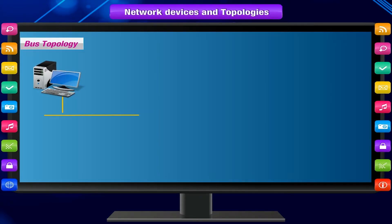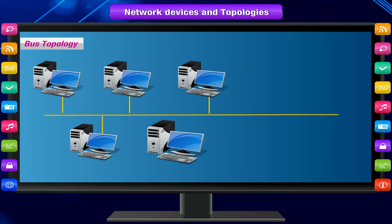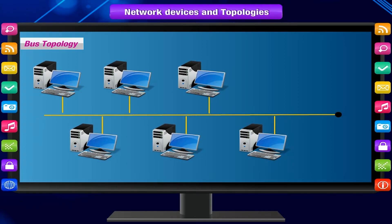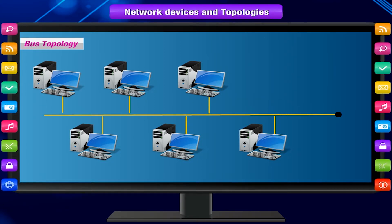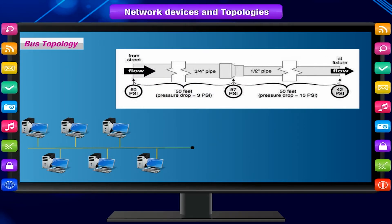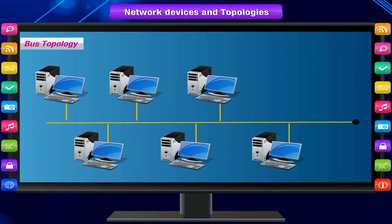Bus topology creates a network by connecting two or more hosts to a length of coaxial backbone cabling. A terminator must be placed at the end of the backbone coaxial cabling. This network is comparable to a series of pipes that water travels through — the terminator prevents the data from flowing out of the network. Bus topology is still regarded as one of the major network topologies.